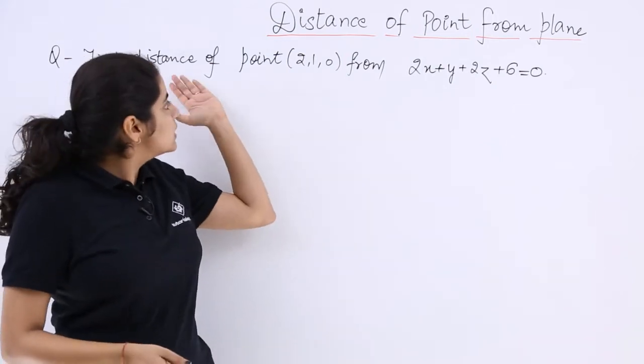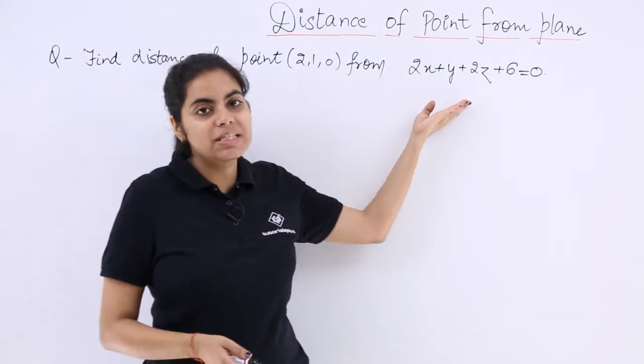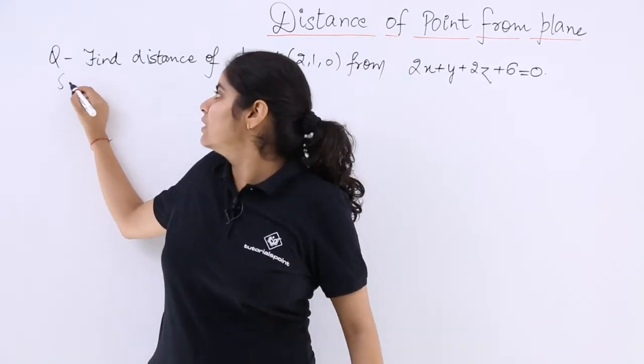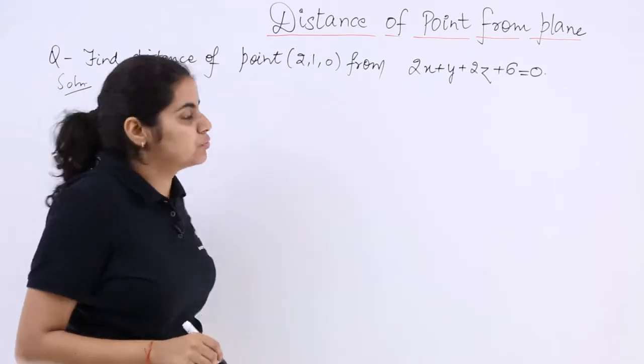We have to find the distance of this given point from this given plane equation. So how to do it? I write the solution and we see this is according to the Cartesian form.